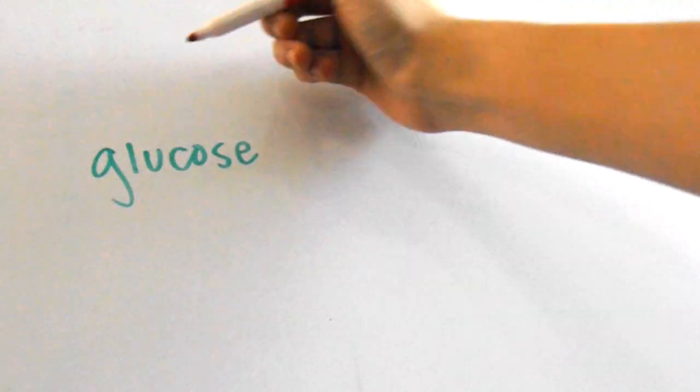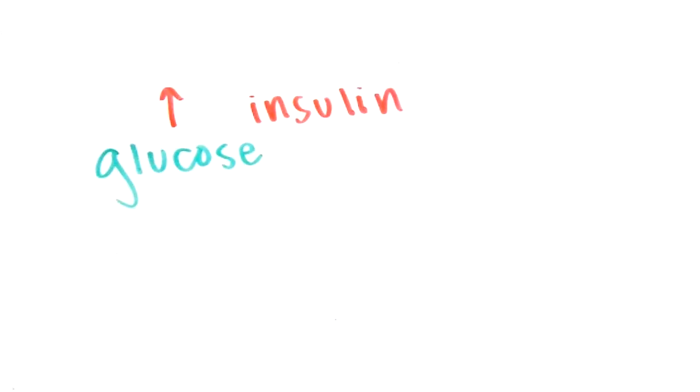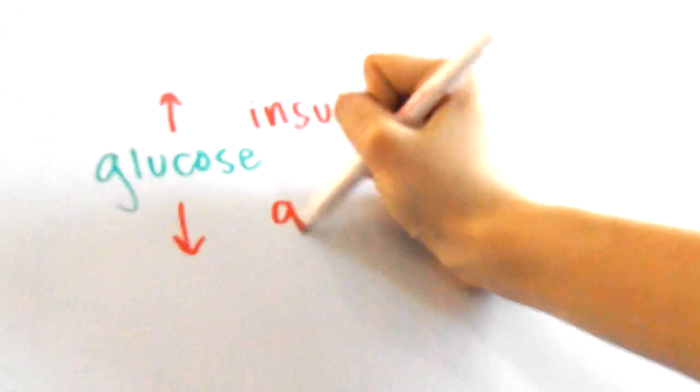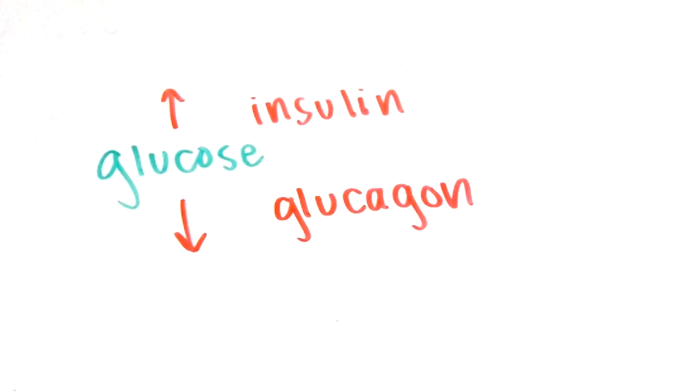When the concentration of glucose is too high, the pancreas secretes insulin to lower the blood glucose level. When the concentration is too low, the pancreas secretes glucagon instead to increase blood glucose levels.